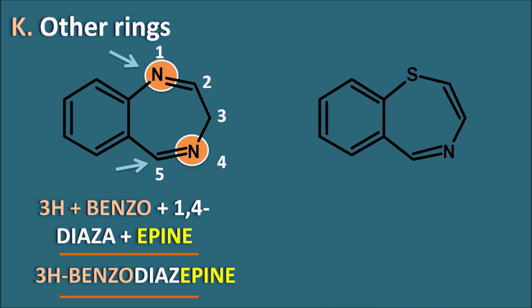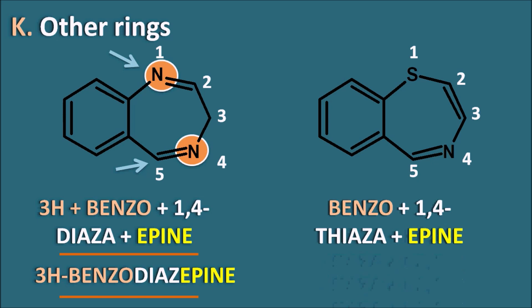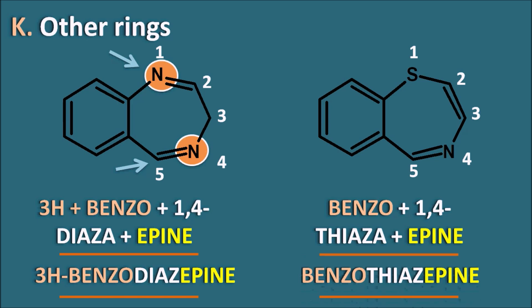Similarly, another ring has sulfur and nitrogen. Sulfur receives more preference than nitrogen, so we start numbering from sulfur. With no saturation point, the name is benzo-1,4-thiazepine. We must indicate it as 1,4-benzothiazepine because there is also a 1,5-benzothiazepine, so we use 1,4 to differentiate.